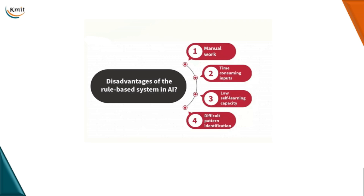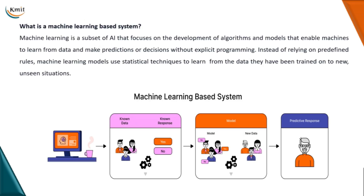When we talk about the disadvantages of rule-based systems, they are built upon a lot of data, deep knowledge of the domain, and a lot of manual work. Writing and generating rules for complex systems is quite challenging and time-consuming. The self-learning capacity of rule-based systems is very low because results are generated as per rules defined by an expert. Complex pattern identification is also challenging because everything is dependent on rules, and encoding everything into rules takes a lot of time for analysis.